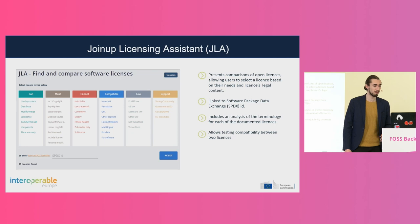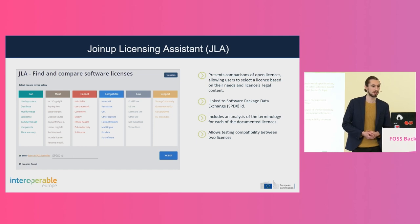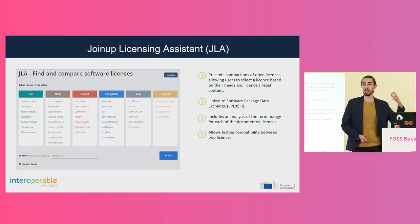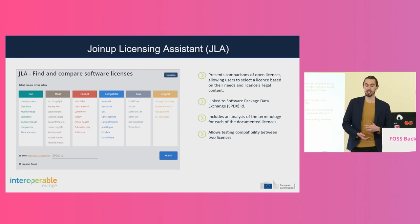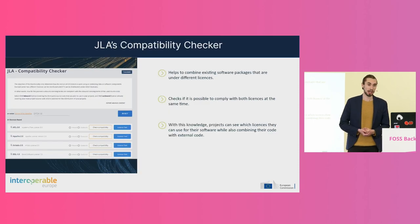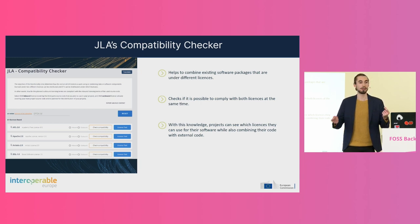OSOR is located on the Join-Up platform, which is a federated platform hosting different projects of the European Commission. You can also find the Join-Up Licensing Assistant there — if you're developing software, you can find and compare software licenses based on their capabilities but also based on their legal certainties. It's linked to the Software Package Data Exchange, and you can also find there a compatibility checker which helps whenever you want to integrate components using different licenses to check for legal compliance.